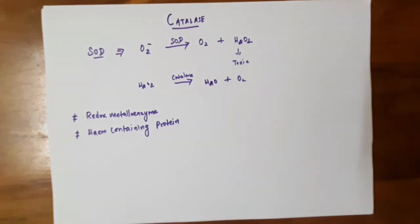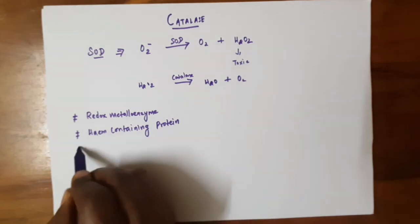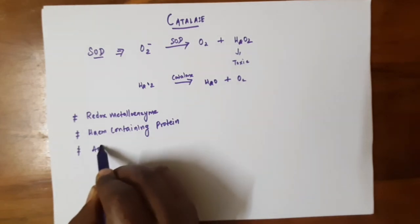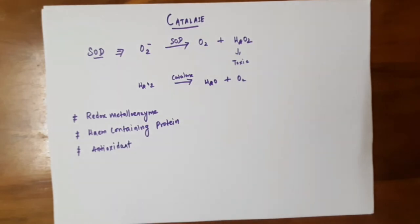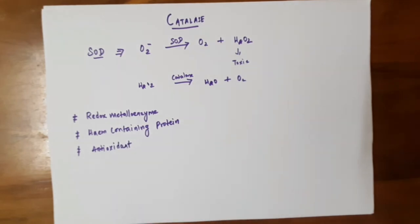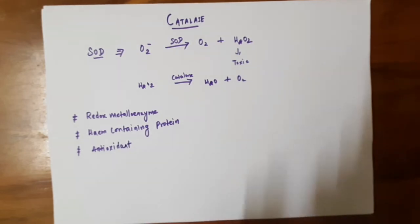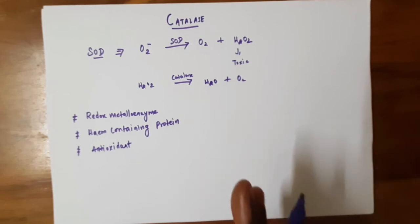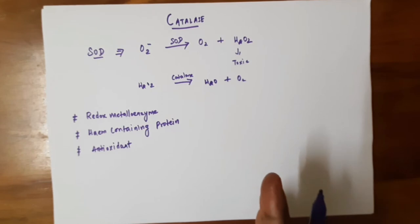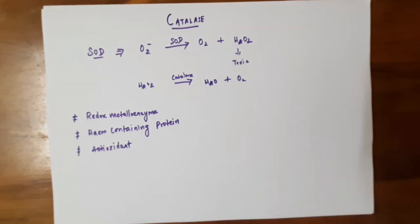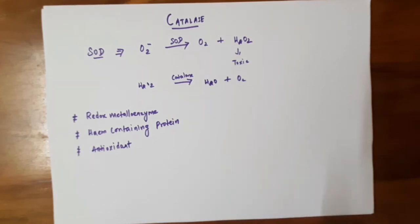This heme-containing protein acts as an antioxidant. Catalase is a very crucial enzyme that decomposes hydrogen peroxide to water and molecular oxygen. It is a well-known enzyme used to reduce the concentration of hydrogen peroxide.